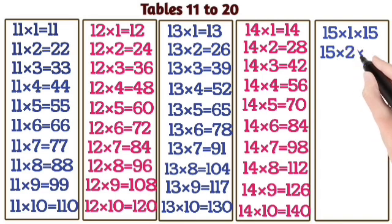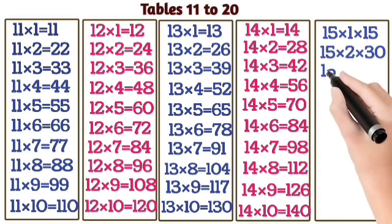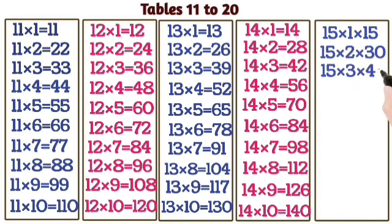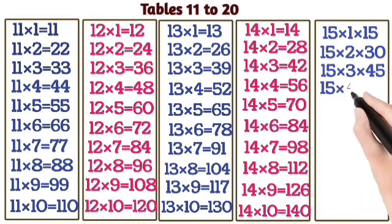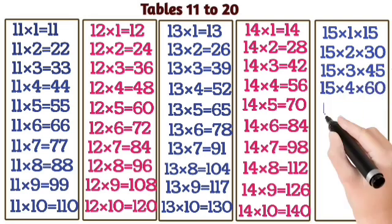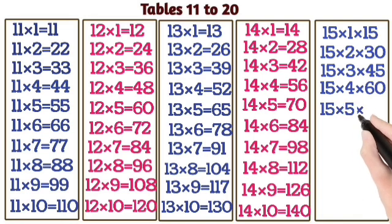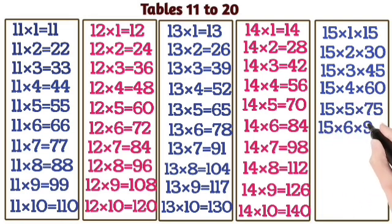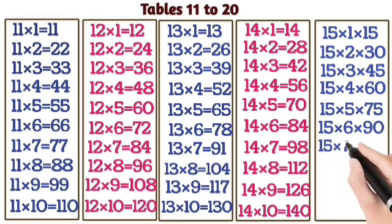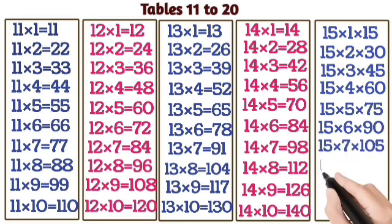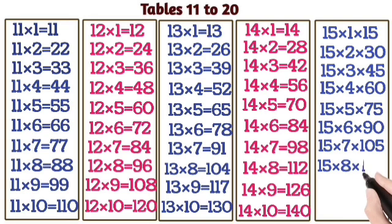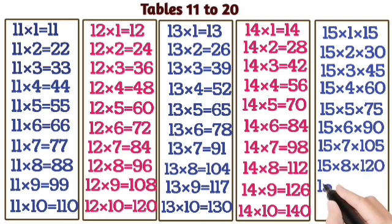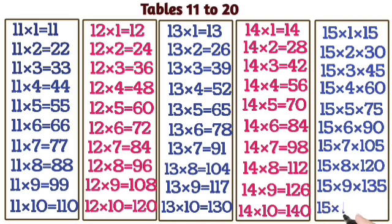15 ones are 15. 15 twos are 30. 15 threes are 45. 15 fours are 60. 15 fives are 75. 15 sixes are 90. 15 sevens are 105. 15 eights are 120. 15 nines are 135. 15 tens are 150.